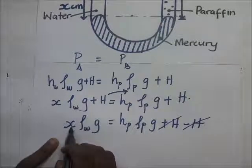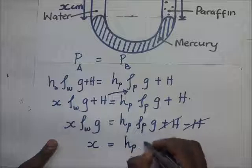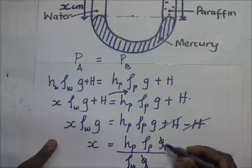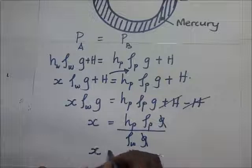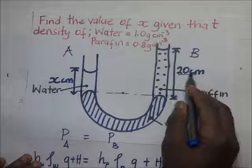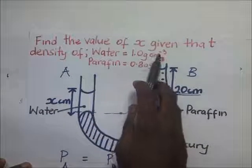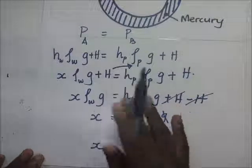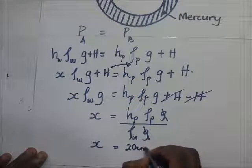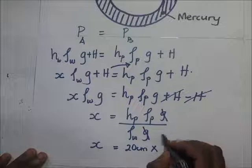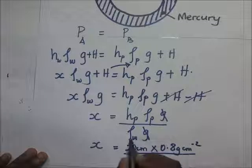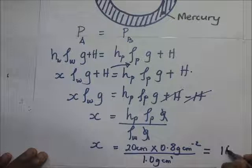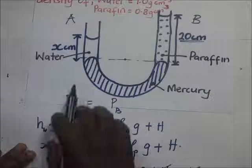Making x the subject: x equals height of paraffin times density of paraffin times gravity, divided by density of water times gravity. The gravity terms cancel. The height of paraffin is 20 cm, density of paraffin is 0.8 g/cm³, and density of water is 1.0 g/cm³. So x equals 20 times 0.8 divided by 1.0, which gives 16 centimeters.